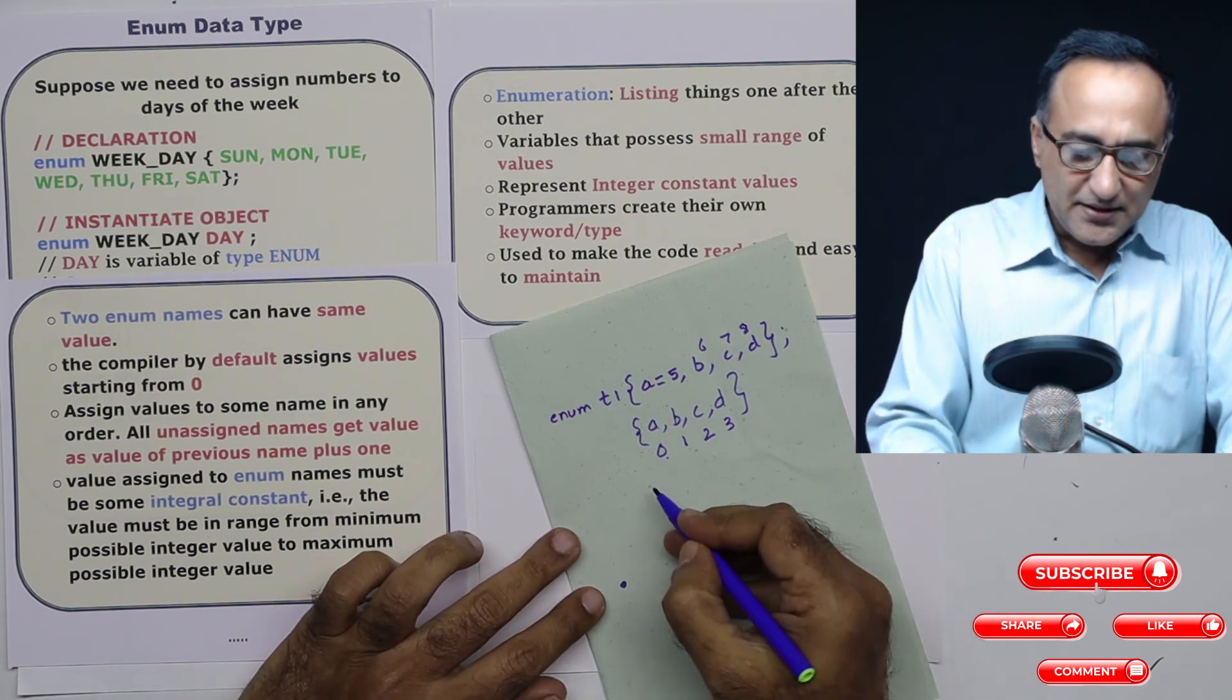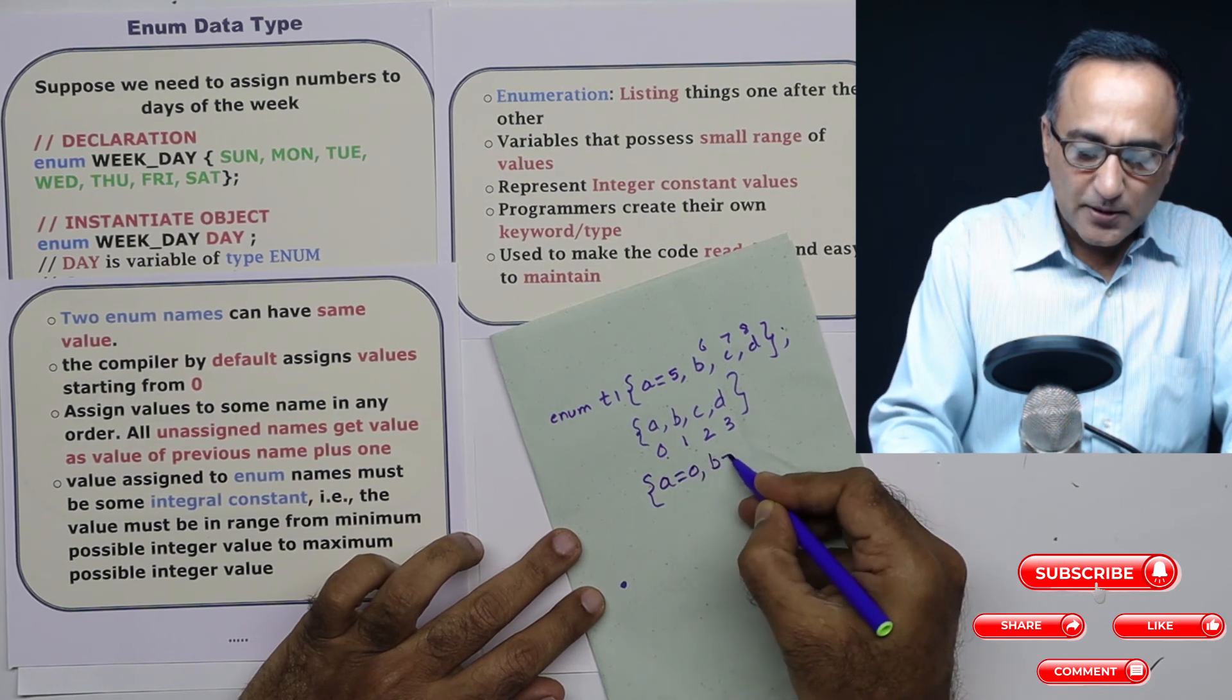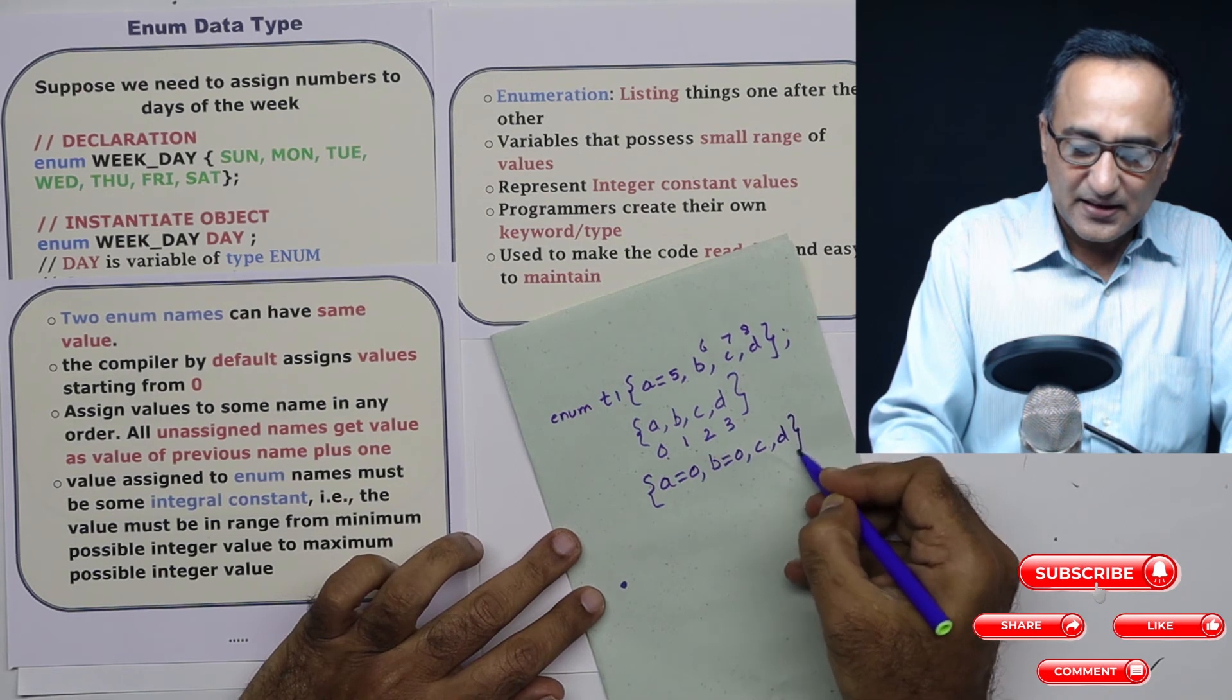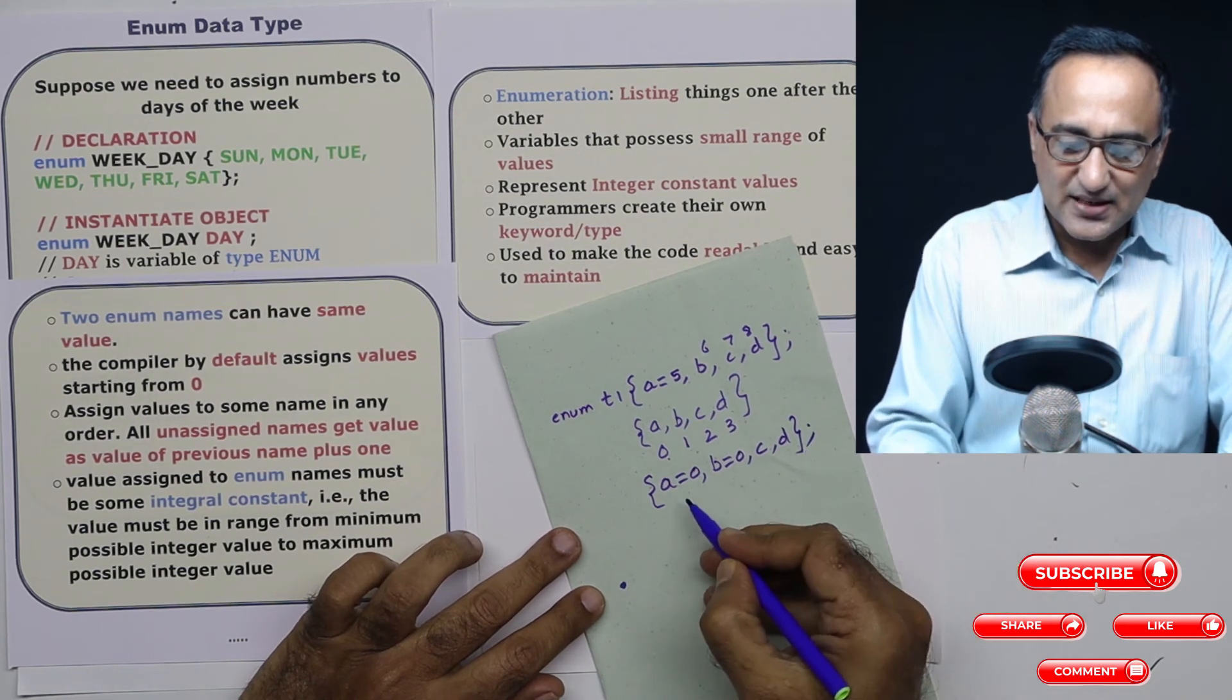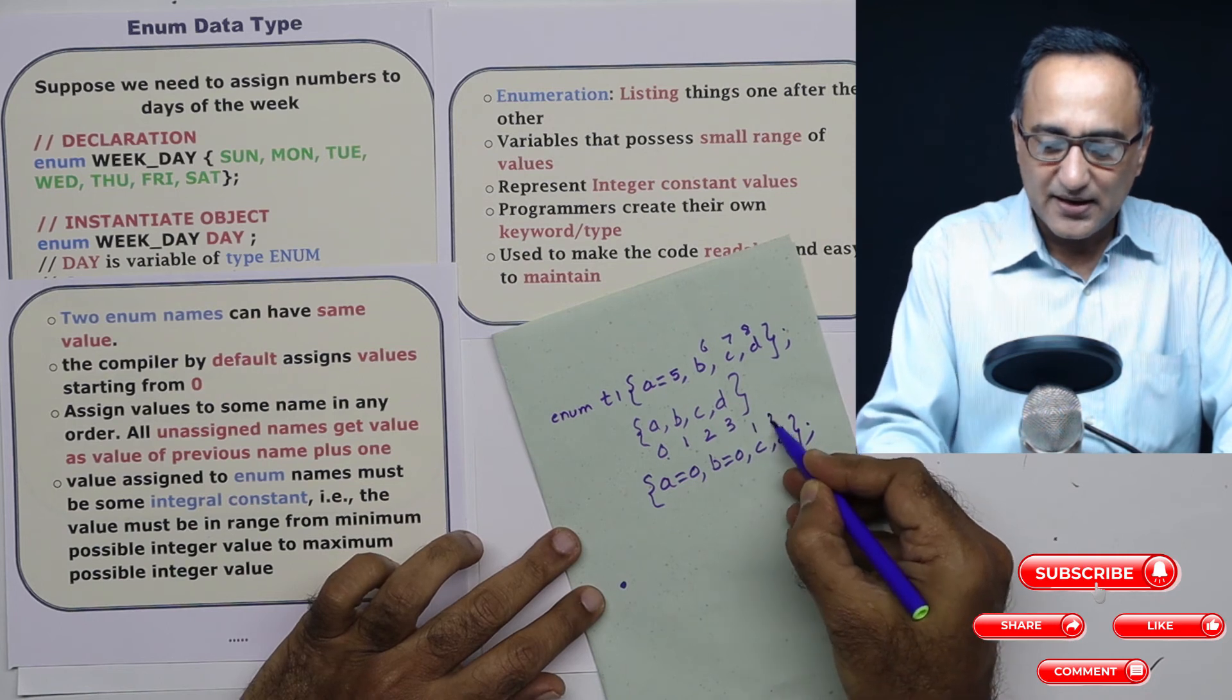Now, it is also possible I do something like this, I can say a is equal to 0, b is equal to 0, and c and d. In this case, what will happen is a will take the value 0, b also will take the value 0, c will be 1 and d will be 2.